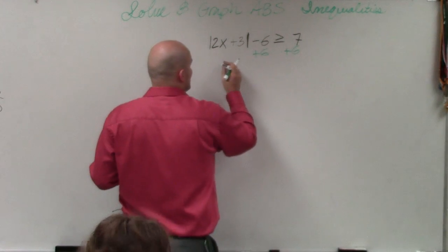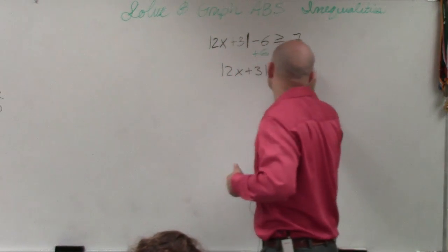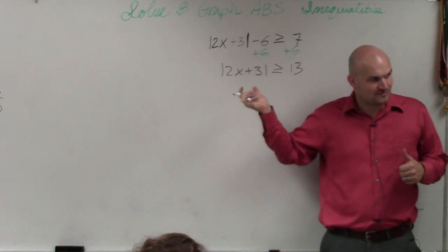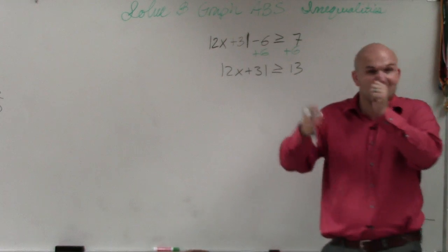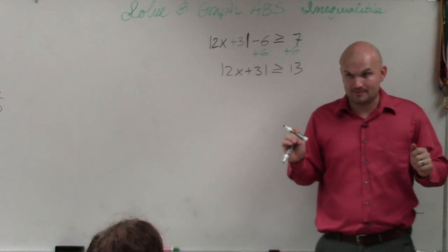Make sure you guys isolate the absolute value. You cannot create your two cases until the absolute value is by itself. So if it's multiplied by a number, divided by a number, added, subtracted, undo it. Make sense?